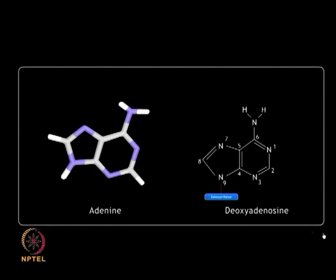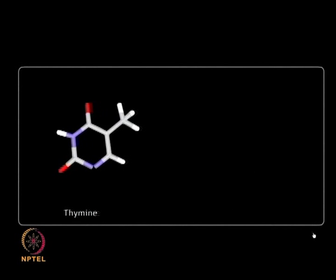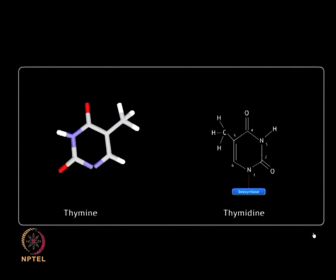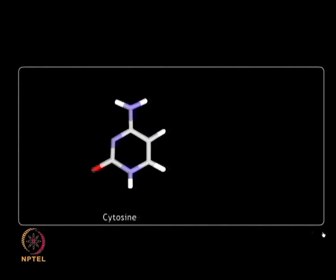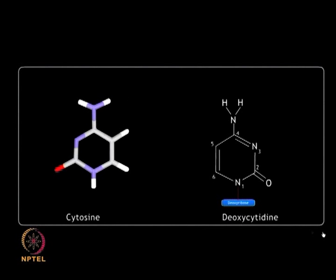DNA is composed of four nucleotides — four different nitrogenous bases that are derivatives of the heterocyclic aromatic compounds purines and pyrimidines. Adenine and guanine are purines. Thymine and cytosine are pyrimidines. The nucleoside of cytosine is known as deoxycytidine.